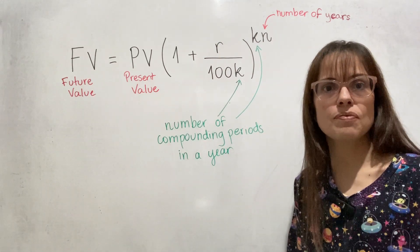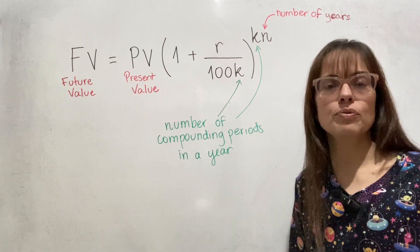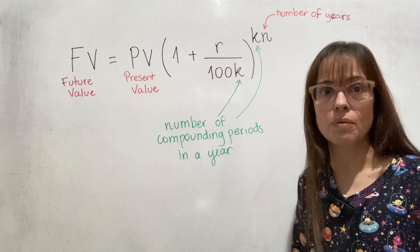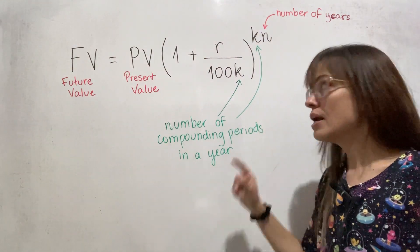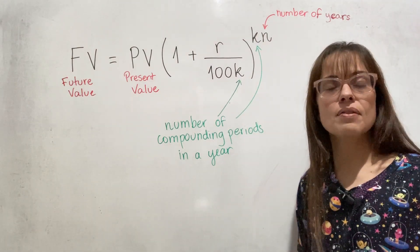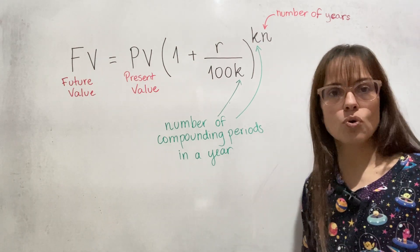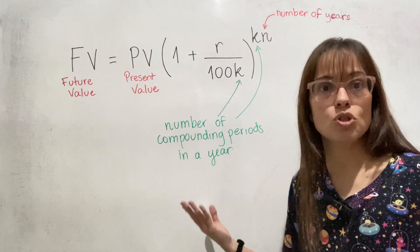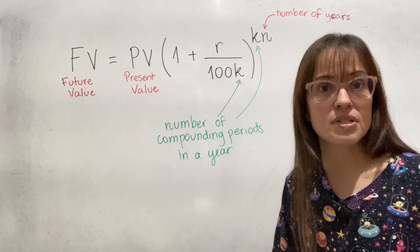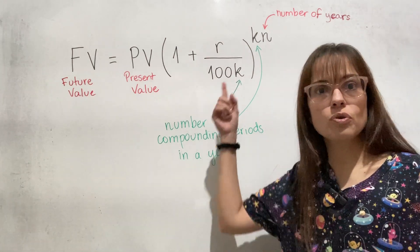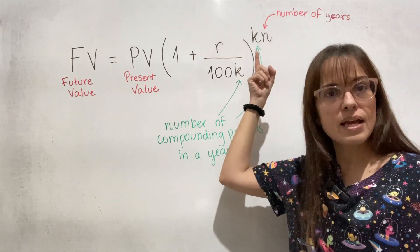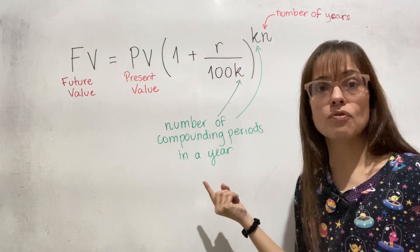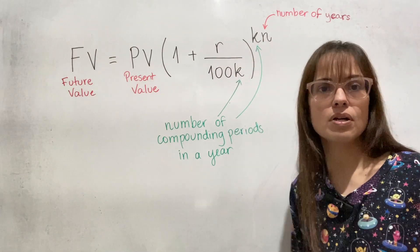The other variable described very specifically is K, which is the number of compounding periods in a year. The same K appears in two different places in the formula — in the exponent multiplied by the number of years, and in the denominator multiplied by 100. For example, if your interest is compounded monthly, you have 12 months in a year, so K is 12. Four years would give 48 in the exponent, not because N is 48 months, but because N is four years and K is 12, so four times 12 makes the exponent 48.